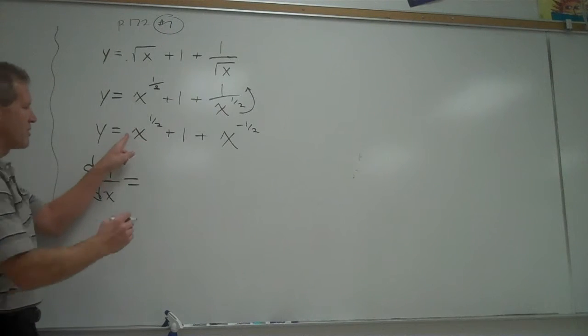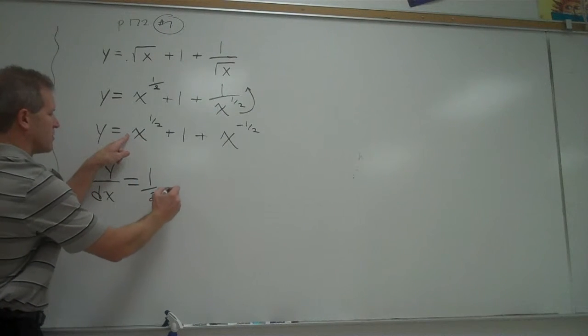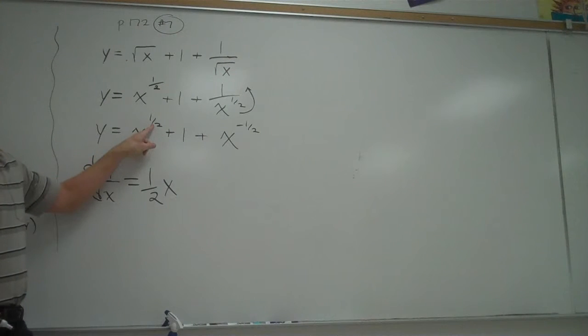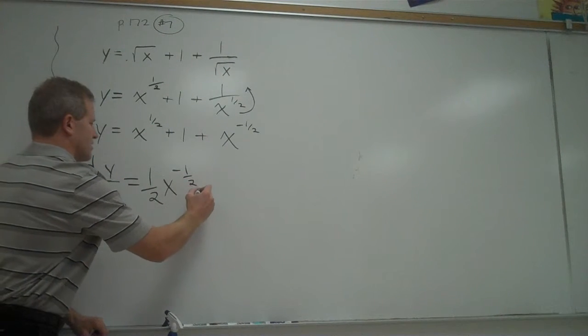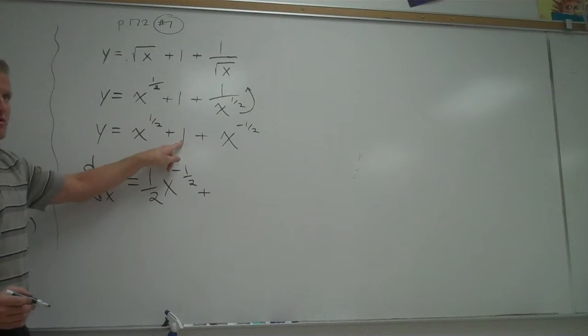On the right side, multiply by one half out front, just using the power rule. Copy down your x. Take one off your exponent. So one half minus one would be negative a half. The derivative of a constant is zero.